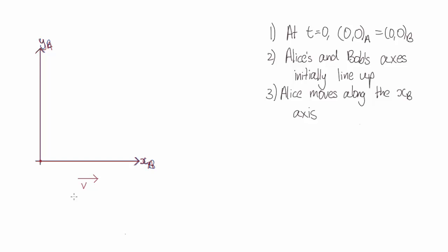So at some later time t, Alice's axes have moved over here, and let's say some event happens right here. What coordinates do Alice and Bob give this event?